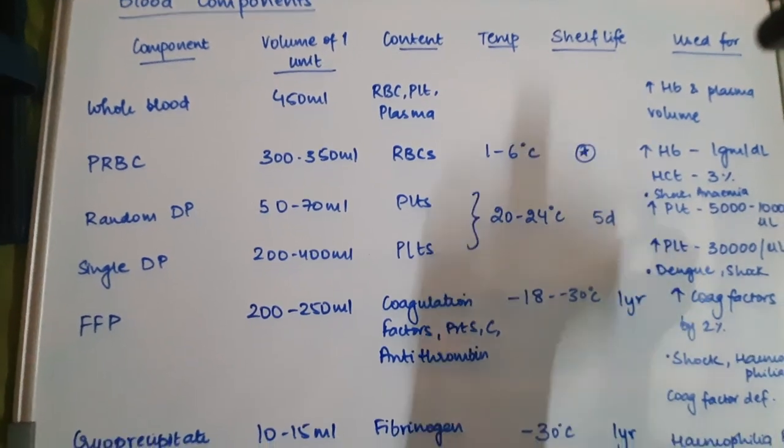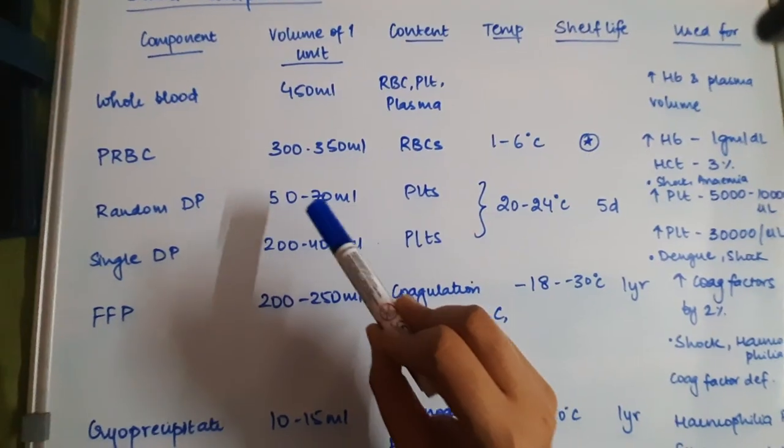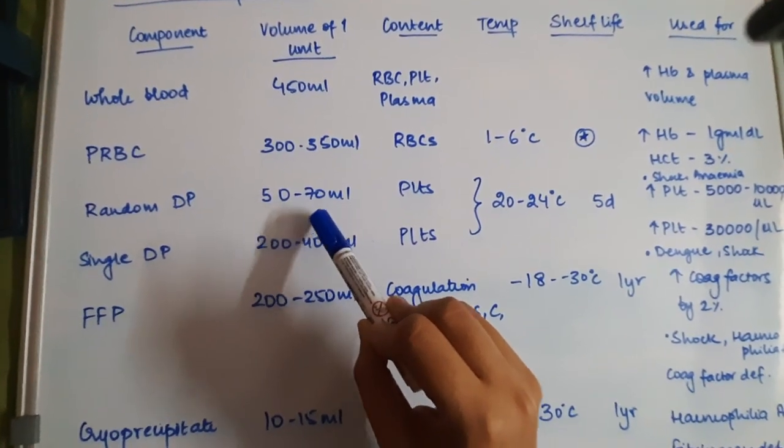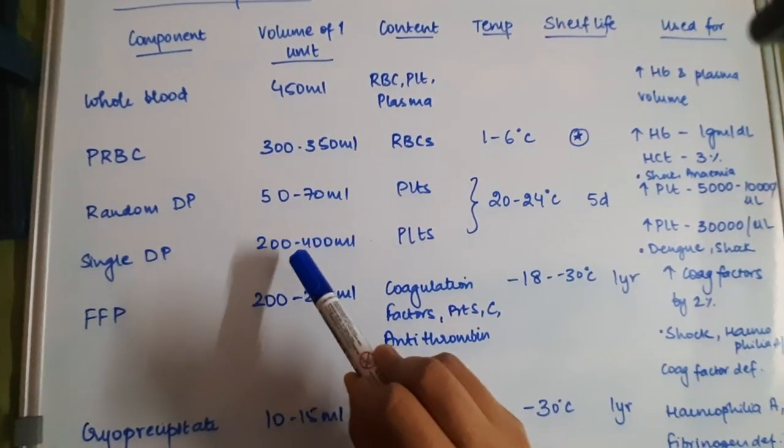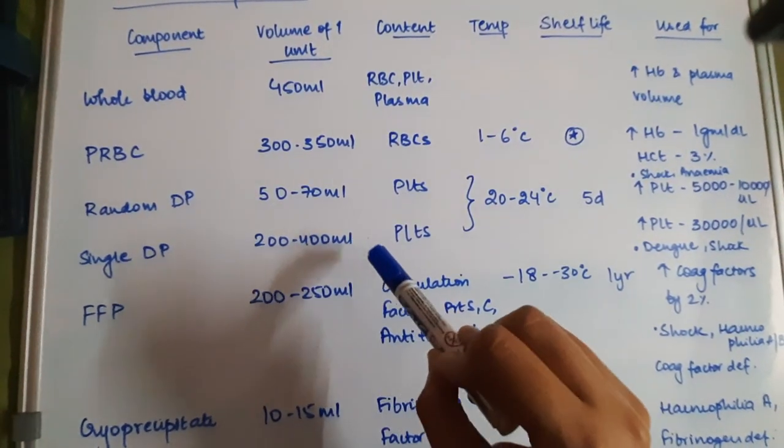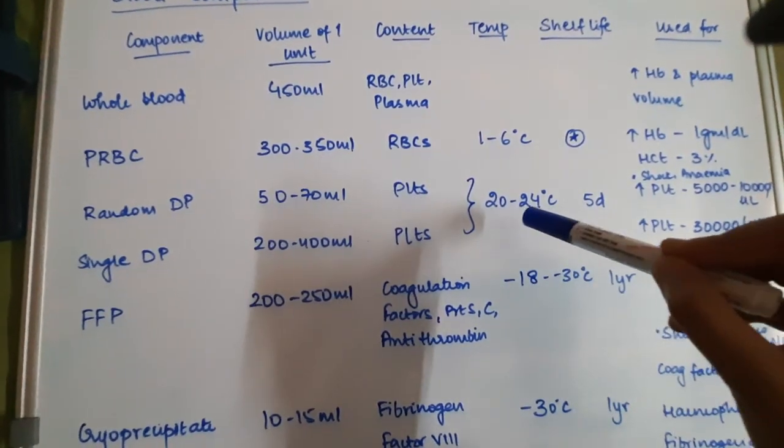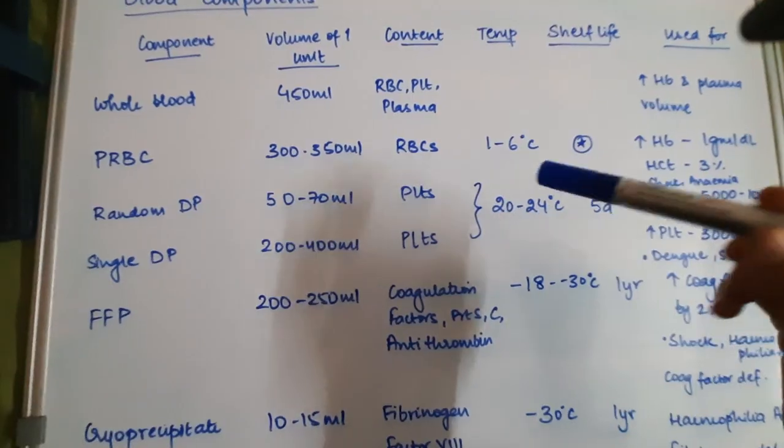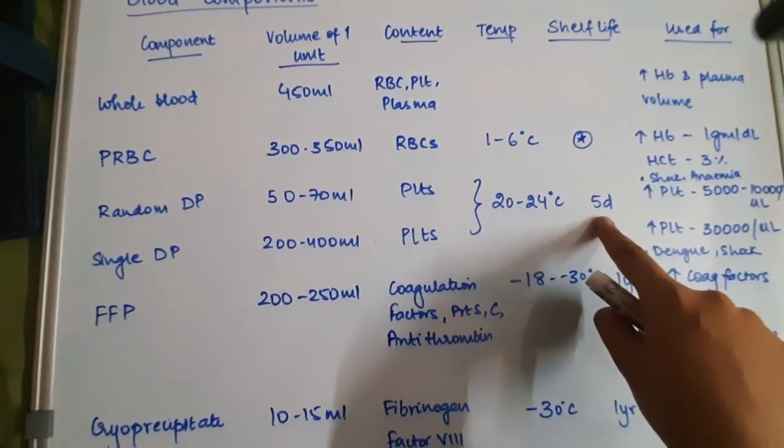Random donor platelets consist of 50 to 70 ml of platelets in one packet, and single donor platelets consist of 200 to 400 ml of platelets in one packet. Platelets are stored at a temperature of 20 to 24 degrees Celsius. Since they are stored at a warmer temperature, their shelf life is less. You can only use it for 5 days after collecting it.